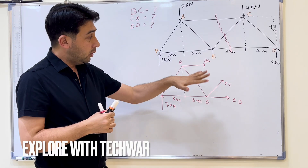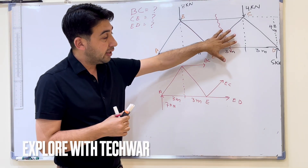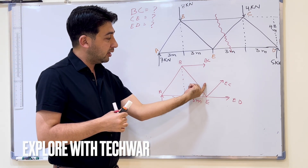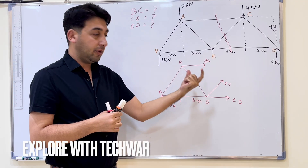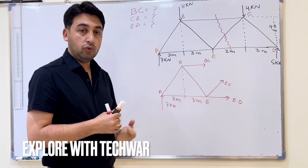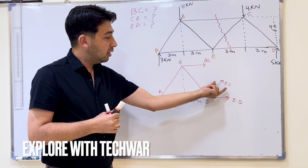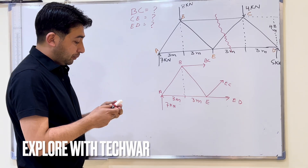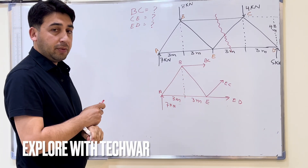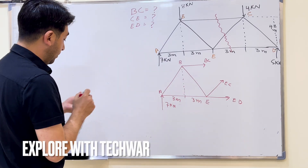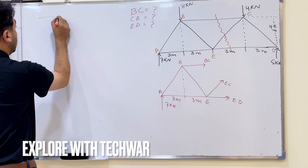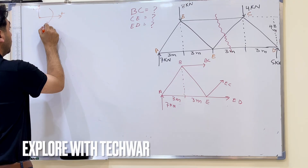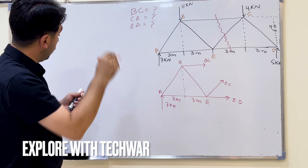Keep in mind: whenever a truss is in equilibrium, any section of that truss will also be in equilibrium. We will consider this section in equilibrium and apply conditions of equilibrium to find the unknown forces BC, EC, and ED. My sign convention is: horizontal force rightward positive, vertical force upward positive, and clockwise moment positive.